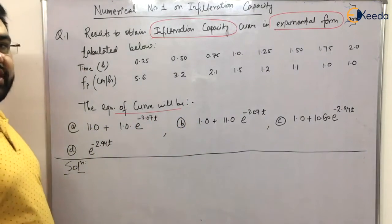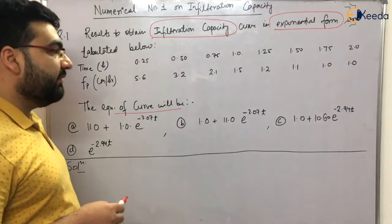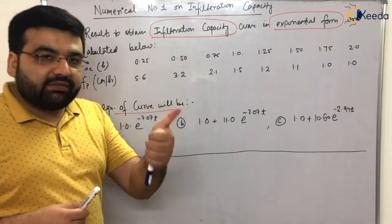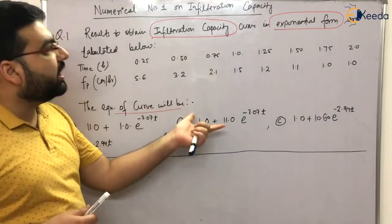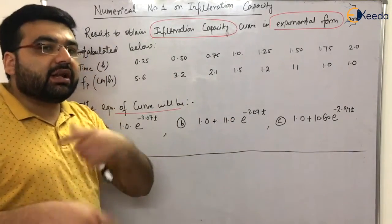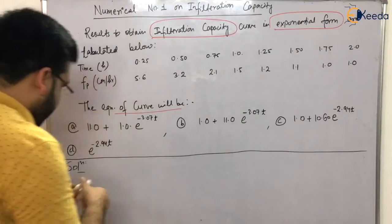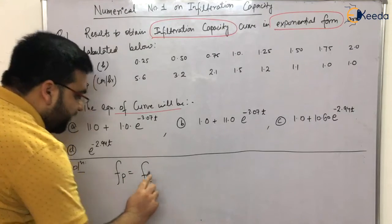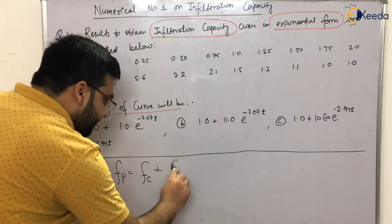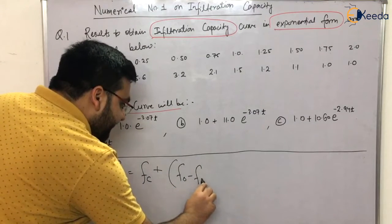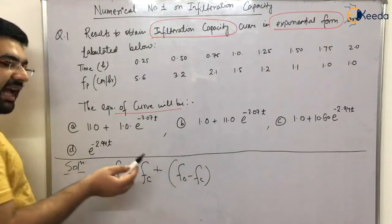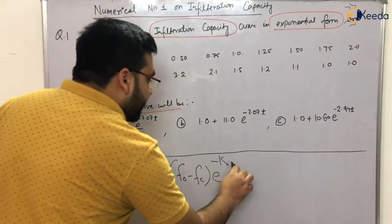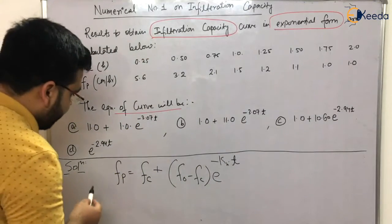The equation of the curve will be determined. For this question we have two methods: the first is Horton's method and the second is Phillips' method. The Phillips method requires hydraulic conductivity and sorptivity to be given, but both are not provided in this numerical. So we will apply Horton's equation: infiltration capacity FP equals FC (the steady state capacity) plus (F0 minus FC) times e raised to the power minus KH times T, where KH is Horton's decay coefficient.